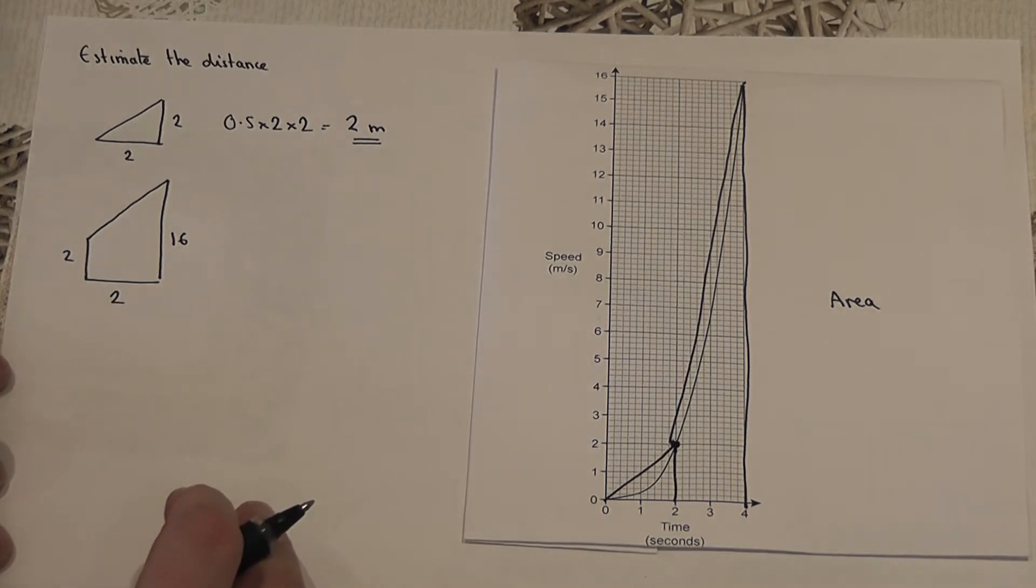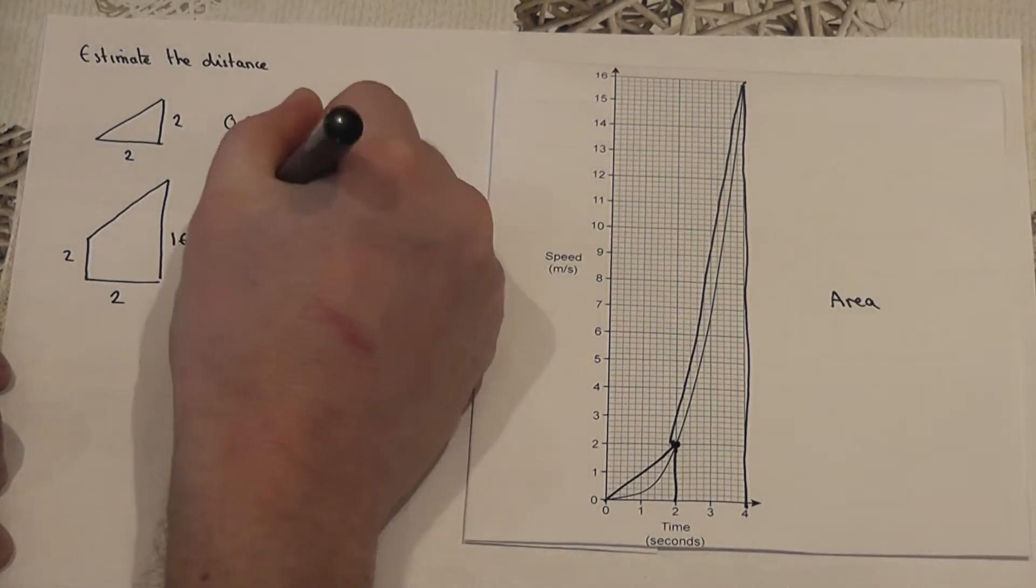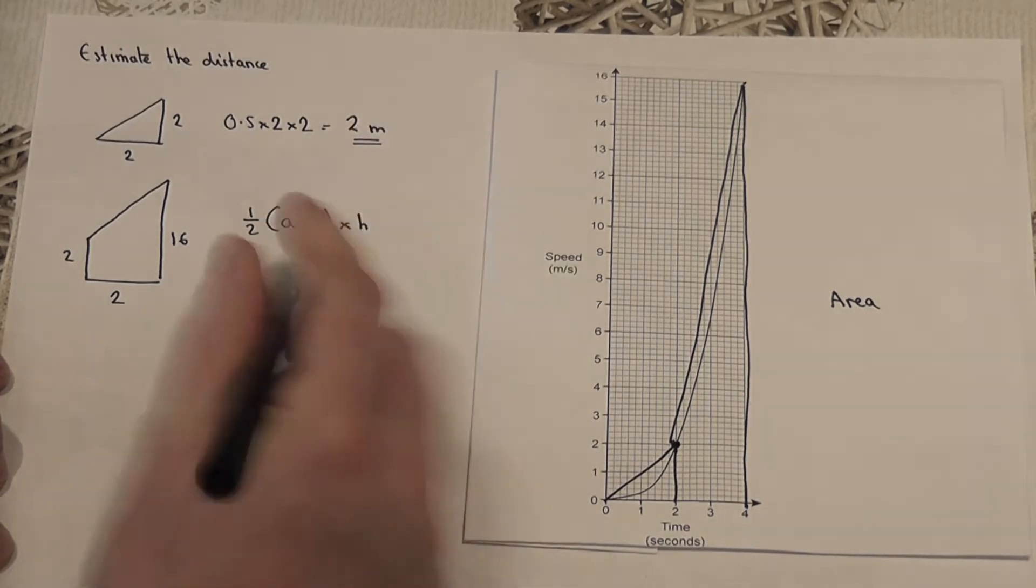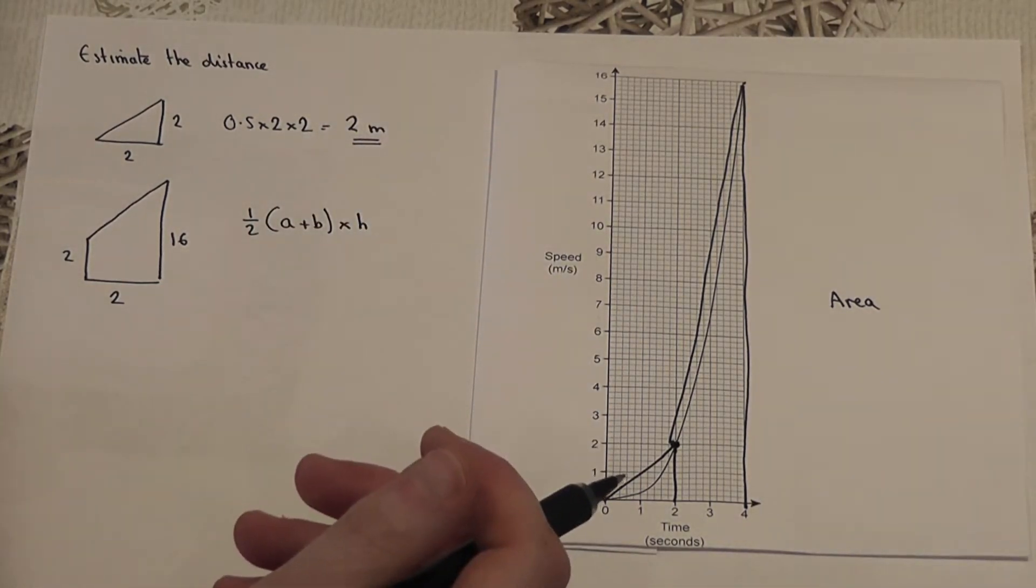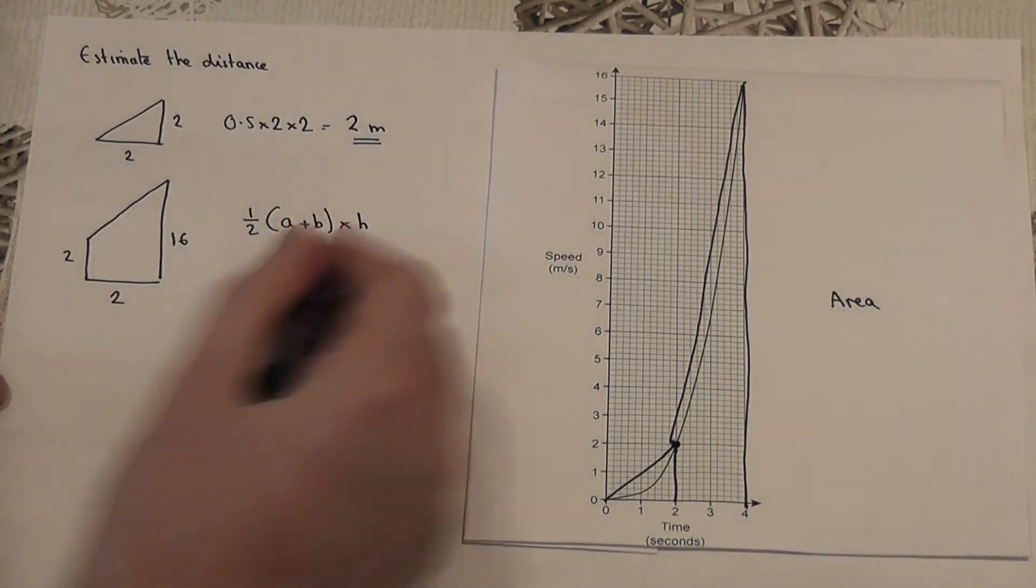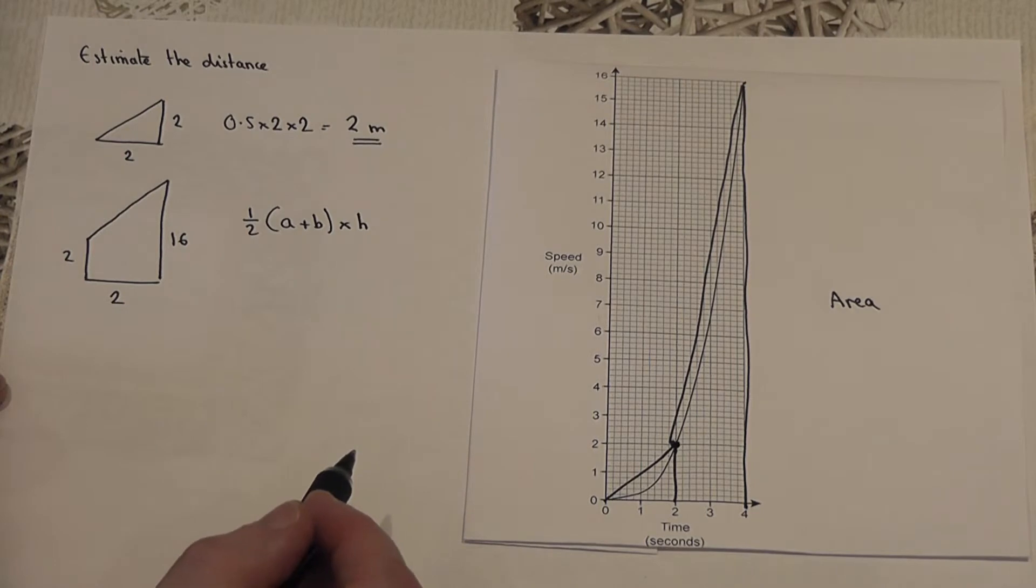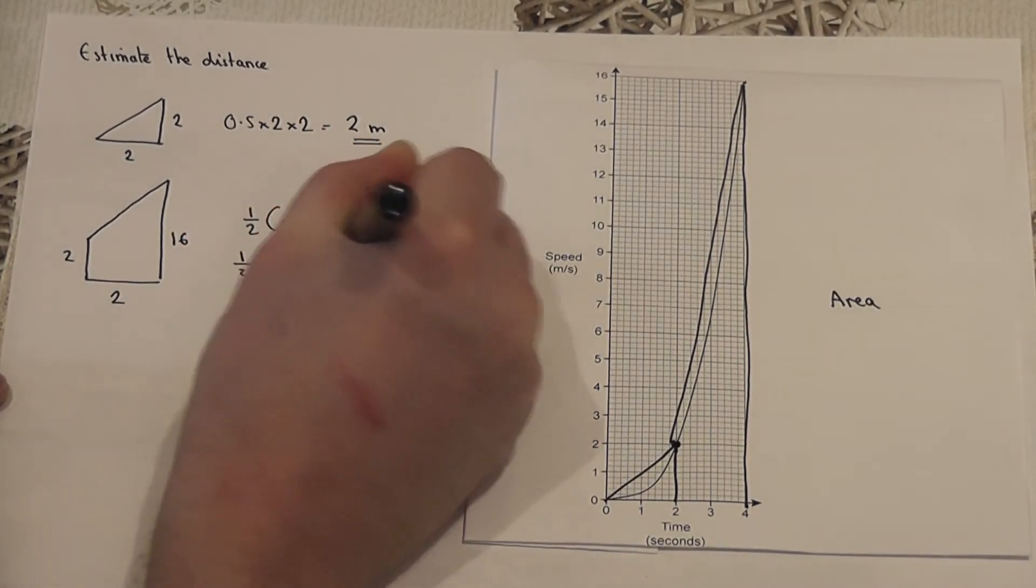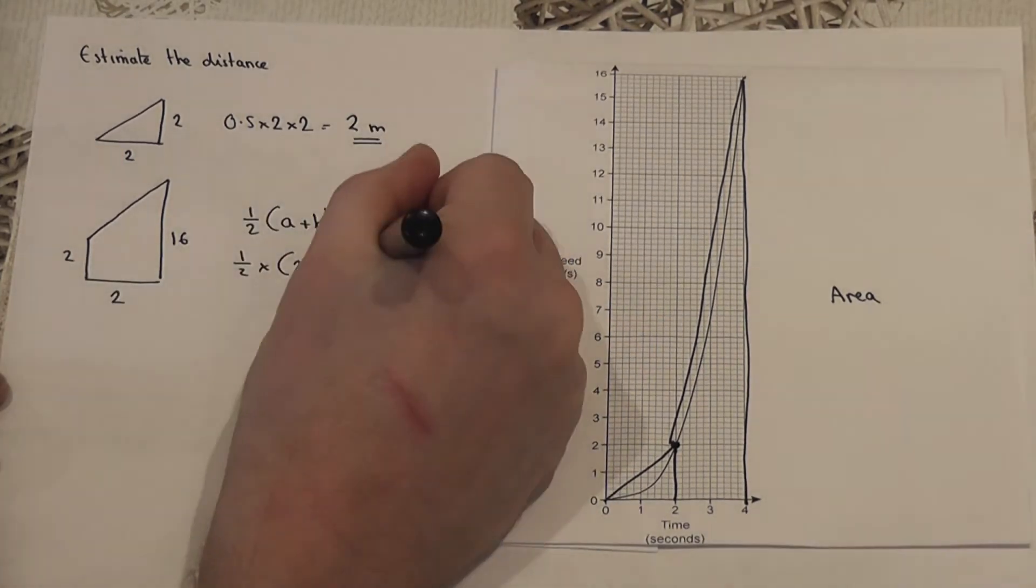Now the formula for a trapezium's area is a half a plus b times by the height or the width. So a and b are the two parallel sides, h is the width of the shape, so this is a half of a plus b multiplied by the width.